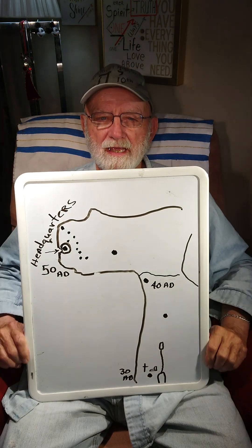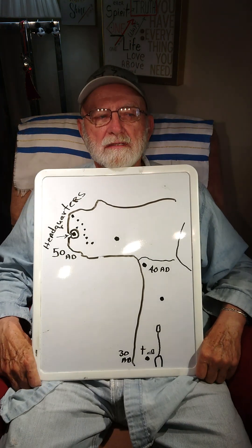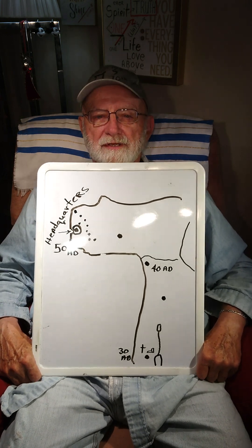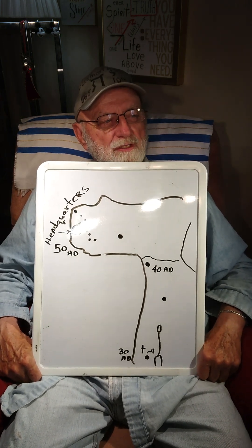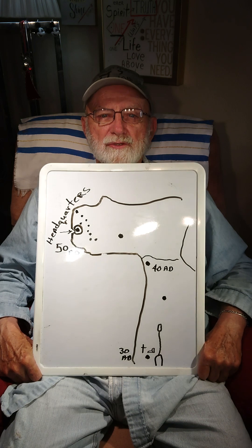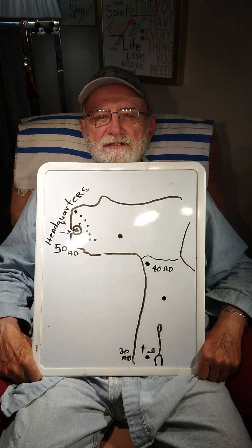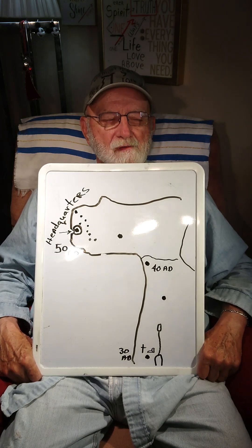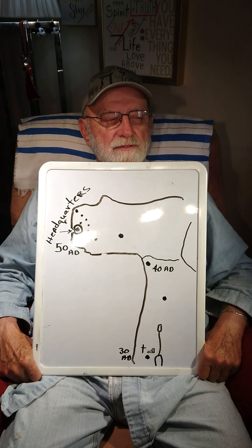Why is every name, person, image — that which you can see, flesh, human body, person — important in Scripture?